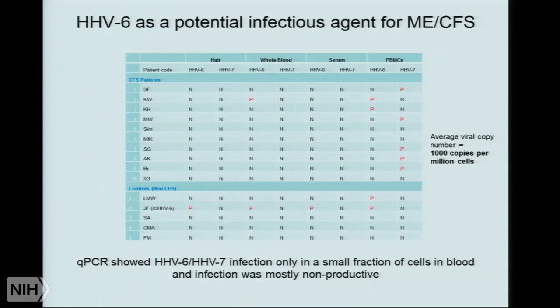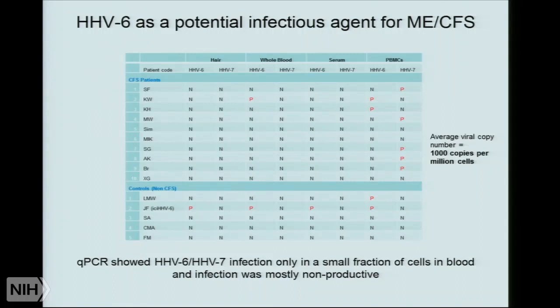Here is another interesting case: I have an iciHHV6 individual — a person who has inherited the virus — so you can detect the virus in hair, whole blood, serum, and PBMCs. This is an ideal control for me. The most interesting finding is that the average copy number of viral DNA is only 1,000 copies per million cells. It is very hard to understand how very few infected cells can create a situation where almost every cell represents disease conditions — which is what we look for in CFS patients.